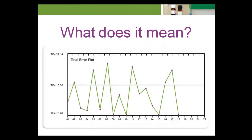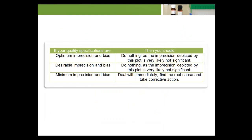What does it mean when the TE plot shows a lot of dispersion due to a large standard deviation? The importance of this dispersion pattern is related to the level of performance chosen in the construction of the total error plot. In the case of minimum imprecision and minimum bias — the lowest level of acceptable performance — this imprecision pattern must be acted on immediately. Remember, total allowable error is a budget, and if the budget is used entirely by imprecision, then relative bias must be zero percent, or the laboratory may produce unacceptable patient test results.